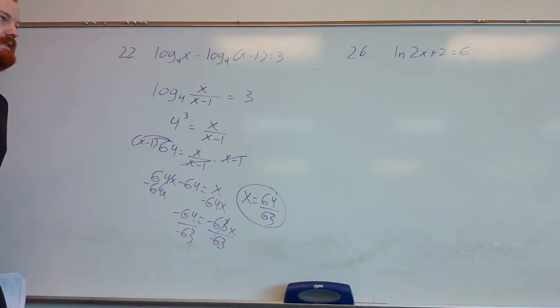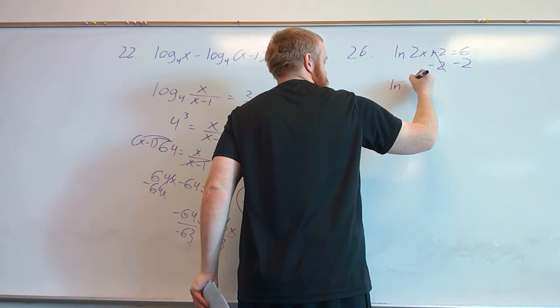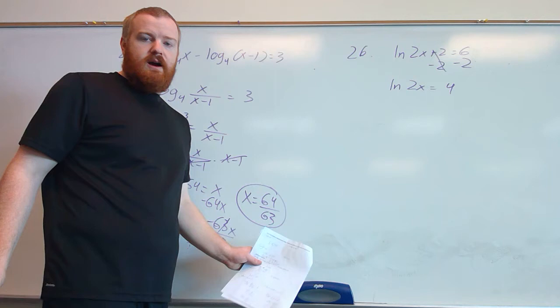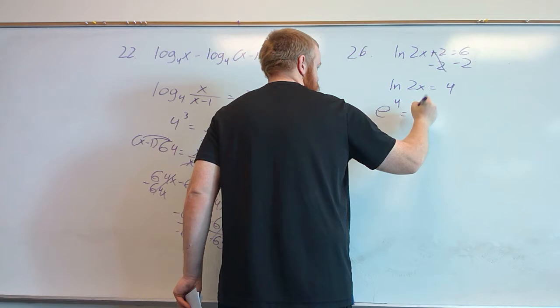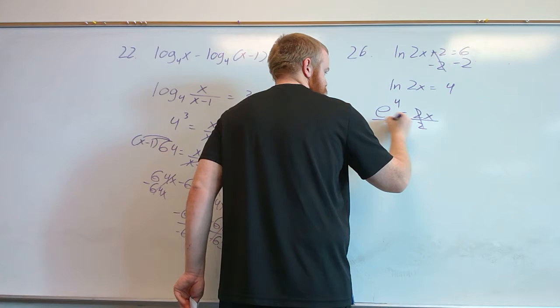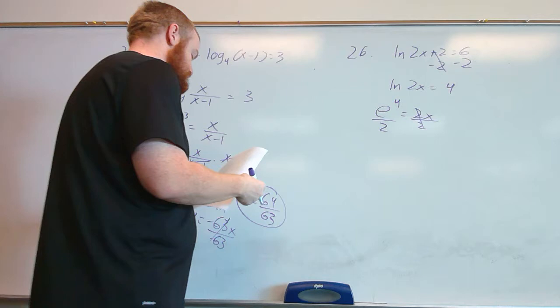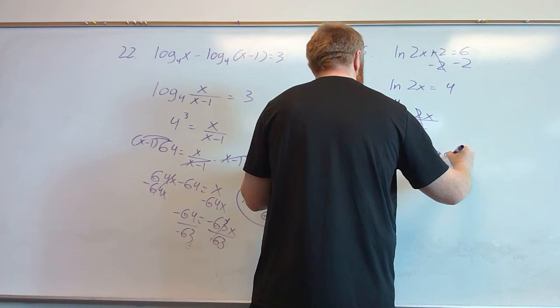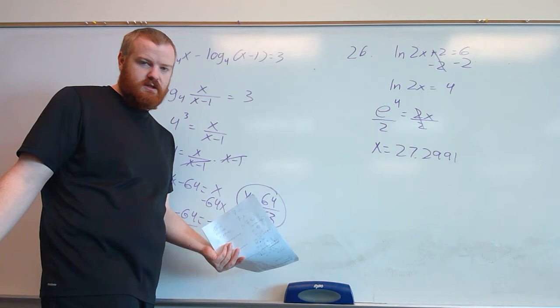For example 26, we have a term added to our log, so we move it to the other side first by subtracting 2, giving us ln(2x) equals 4. Since it's a natural log, the base is e, so converting to exponential form gives e to the 4 equals 2x. Dividing both sides by 2 and plugging e to the 4 divided by 2 into the calculator gives x equals approximately 27.2991. Plugging back in, 2 times this positive number is positive, so our solution is good.